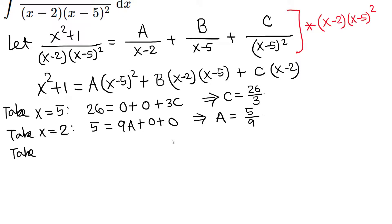Now we need B. We already know A and C, so we can choose any other value of x. The easiest choice is x equals 0. Then 0 squared plus 1 equals 1 on the left. On the right: (0 minus 5) squared is 25, so 25A; then (0 minus 2)(0 minus 5) equals negative 2 times negative 5, which is positive 10, so 10B.